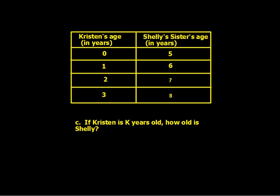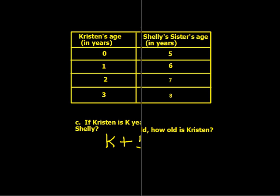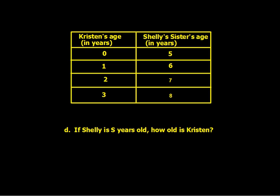If Kristen is K years old, how old is Shelly? The expression to represent this is K plus five. Letter D: if Shelly is S years old, how old is Kristen? Now we're working in reverse — the expression would be S minus five.